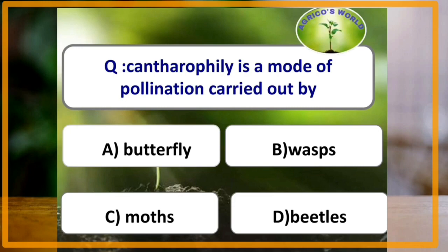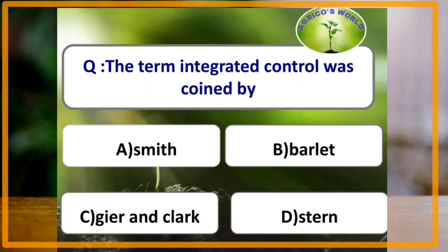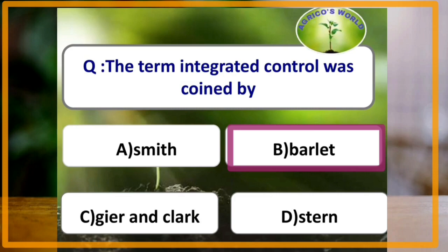Cantharophily is a mode of pollination carried out by which of the following insect? The answer is beetles. The term integrated control was coined by which of the following scientist? The answer is Bartlett.